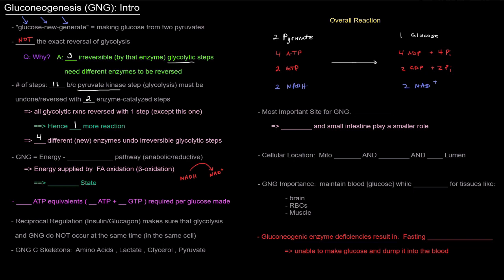Now gluconeogenesis is an energy-requiring pathway, which is sort of the opposite of glycolysis, which created energy. In this process, we're building glucose and it's anabolic and reductive, which again is opposite of glycolysis.